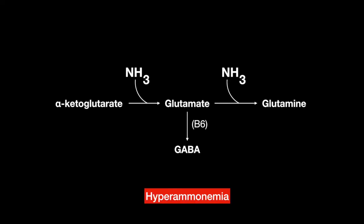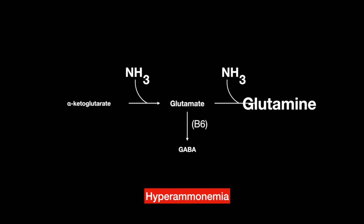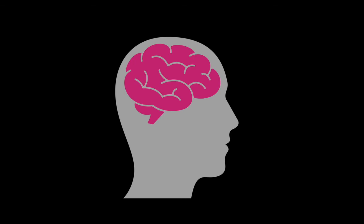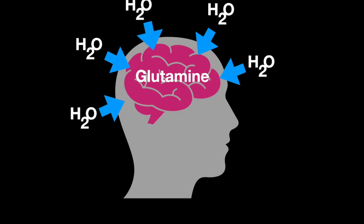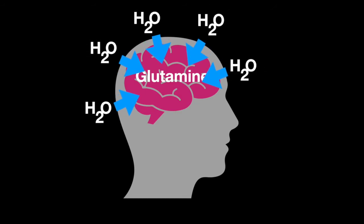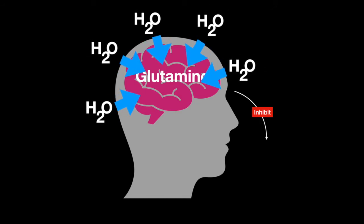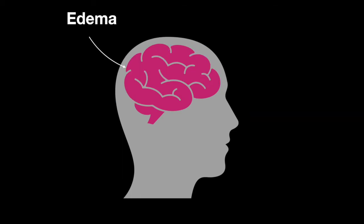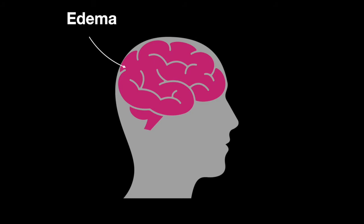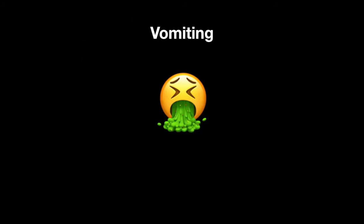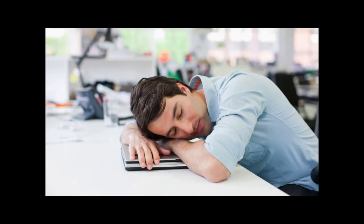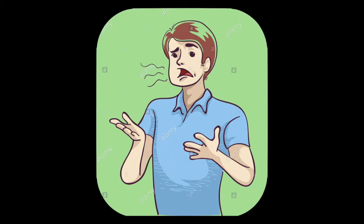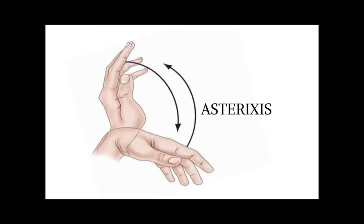In hyperammonemia, glutamine levels become much higher than glutamate, GABA, and alpha-ketoglutarate. The central nervous system will experience toxicity because the glutamine levels increase, therefore increasing osmotic pressure, which can inhibit the TCA cycle. Patients present with cerebral edema, blurred vision, vomiting, somnolence, slurred speech, and asterixis — a flapping tremor.